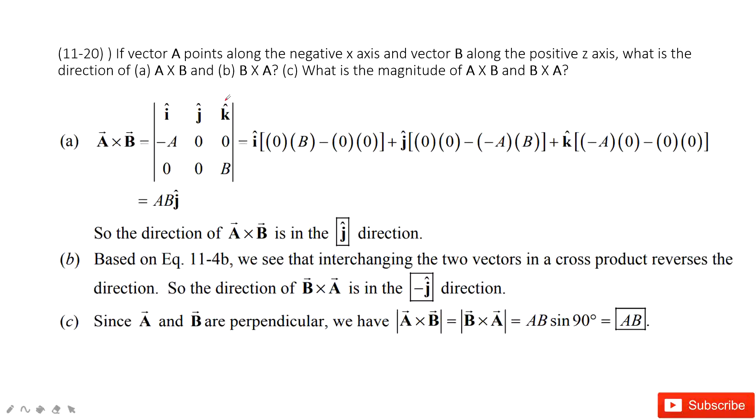For these problems, we do the operation for vector cross products. So we can see the first one - we need to find the cross product for A and B.